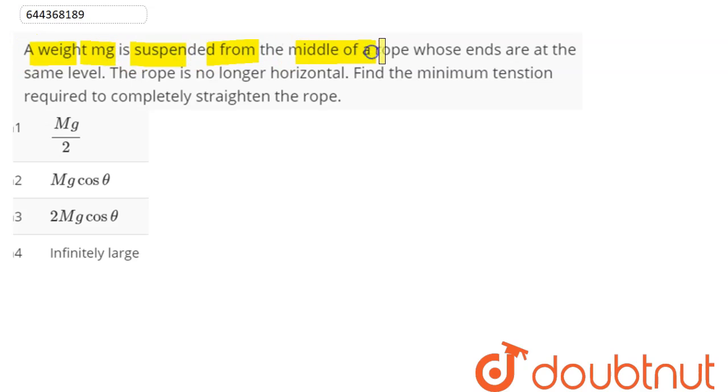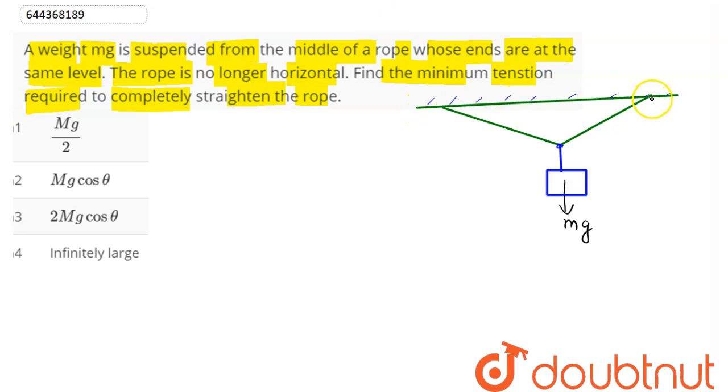A weight mg is suspended from the middle of a rope whose ends are at the same level. The rope is no longer horizontal. Find the minimum tension required to completely straighten the rope.